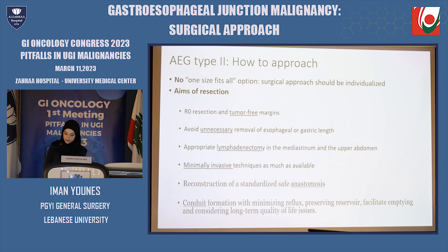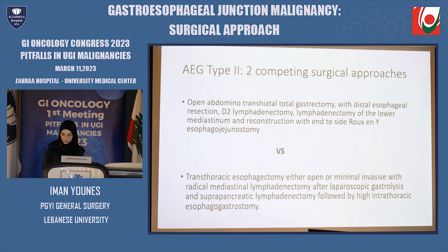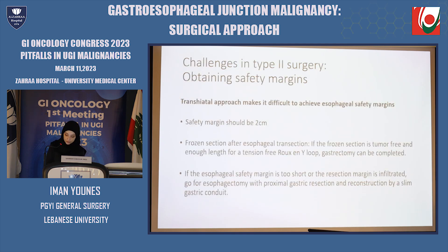We aim to avoid unnecessary removal of esophageal or gastric length, want appropriate lymphadenectomy in the mediastinum and upper abdomen, and want a minimally invasive technique as much as possible considering patient safety. For reconstruction, we need a standardized safe anastomosis and conduit formation that minimizes reflux, preserves the reservoir, facilitates emptying, and considers long-term quality-of-life issues. For advanced type 2 AEG, two main surgical procedures are competing. The first is a transthoracic en bloc esophagectomy, either open or minimally invasive, with radical mediastinal lymphadenectomy after laparoscopic gastrolysis and suprapancreatic lymphadenectomy, followed by a high intrathoracic esophagogastrostomy. The second is an abdominal transhiatal total gastrectomy, usually open, with distal esophageal resection, D2 lymphadenectomy, lower mediastinal lymphadenectomy, and reconstruction with an end-to-side esophagojejunostomy with a Roux-en-Y in the lower mediastinum.